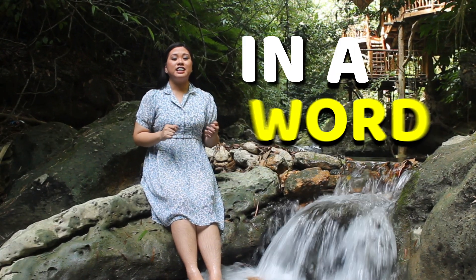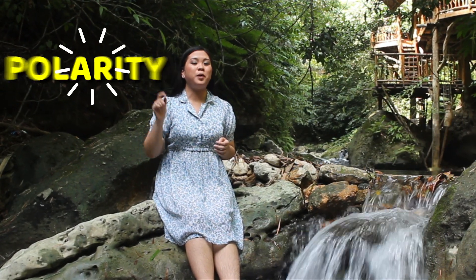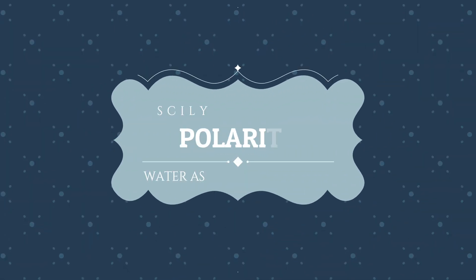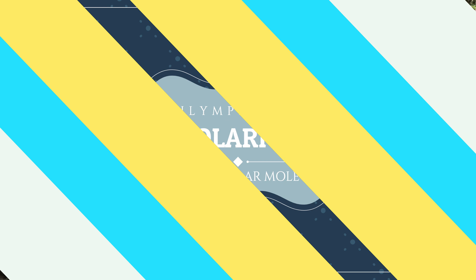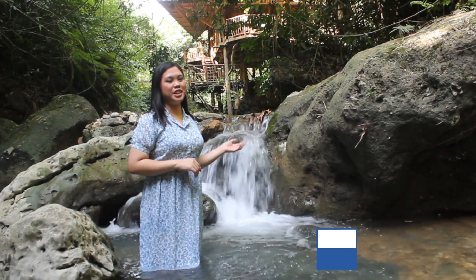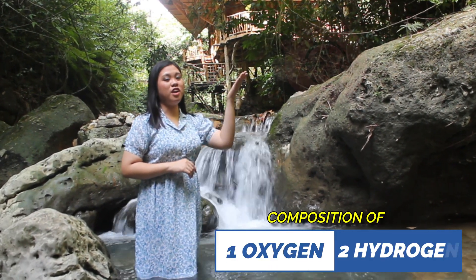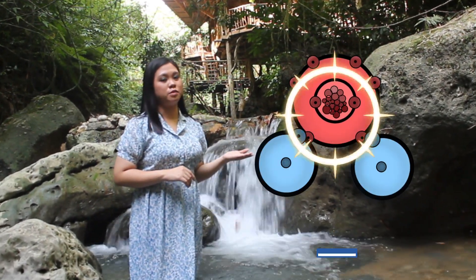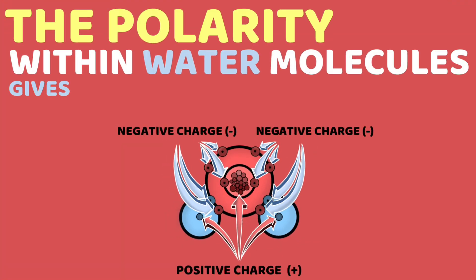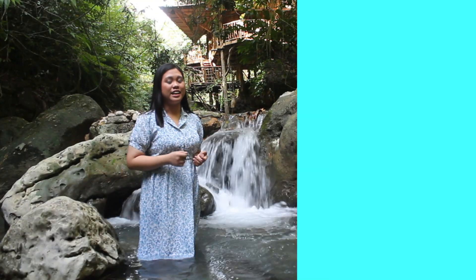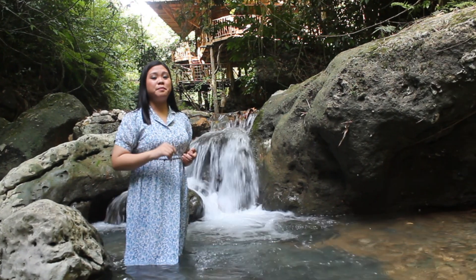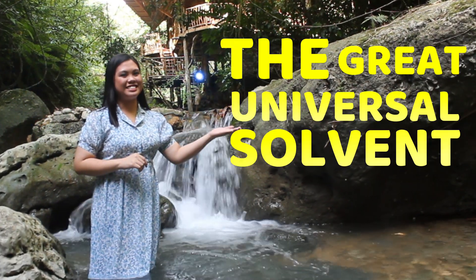In a word, the answer to this question is polarity. Water is a polar molecule — a simple molecule made up of one oxygen atom and two hydrogen atoms. The polarity within these water molecules gives them the unique characteristics that make them life-sustaining, like being the great universal solvent.